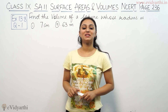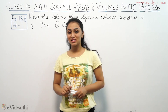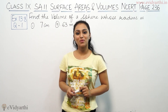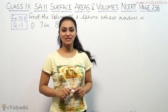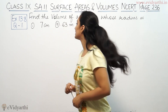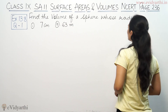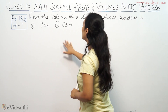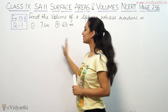Hi, this is Khushku with another question of surface area and volumes. This is question 1 from exercise 13.8, page 236 from NCERT. This says: find the volume of a sphere whose radius is 7 cm and 0.63 meters. These are two parts.